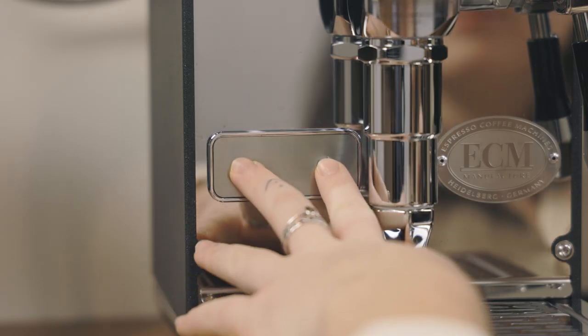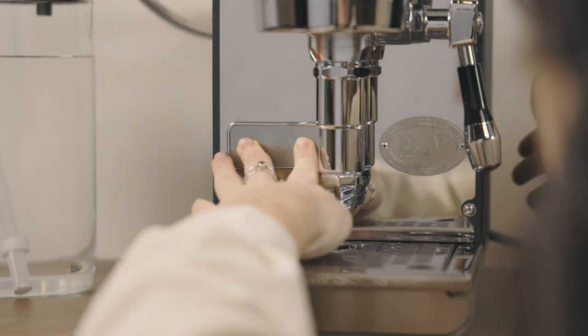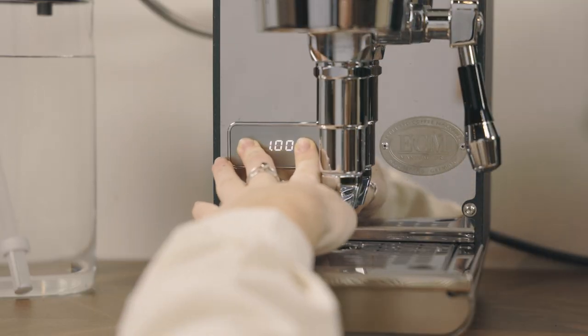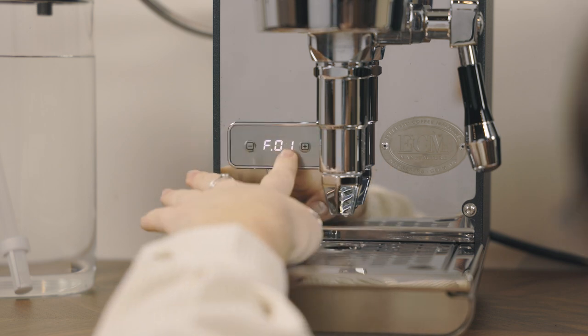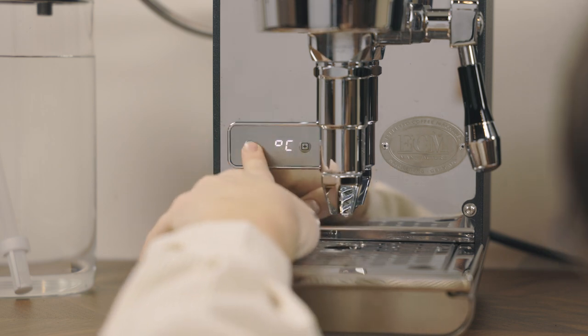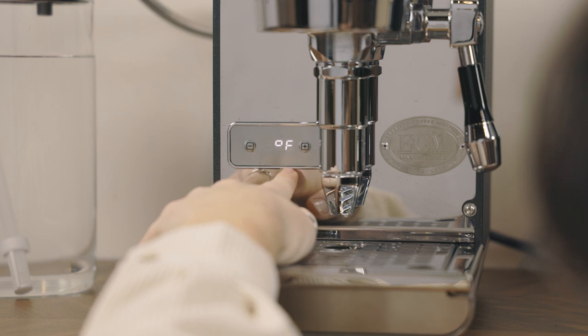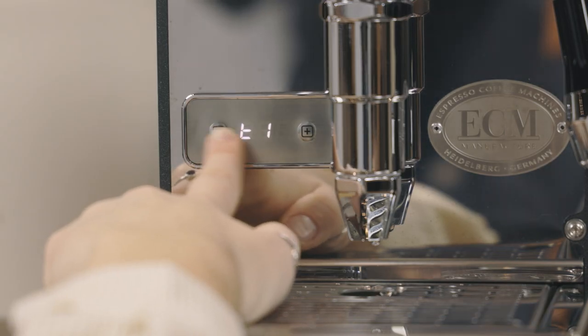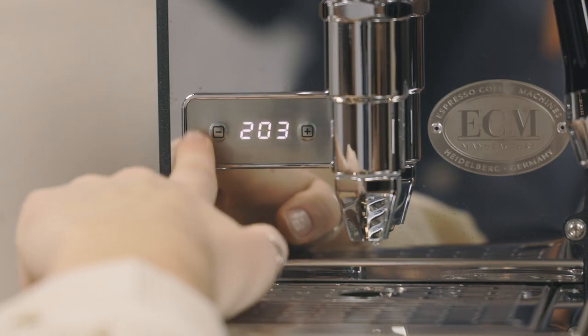To enter into programming mode, press the plus and minus buttons simultaneously while turning the machine on. Continue to hold these buttons until F.01 appears. The minus button allows you to scroll through the settings menu. The plus button selects the setting you wish to edit.